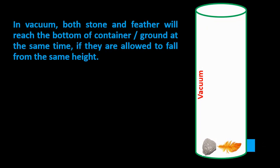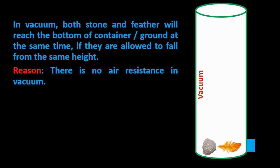In this case, both the stone and the feather reach the bottom of the glass jar at the same time when allowed to fall from the same height. They reach together because there is no air resistance. So, in the presence of air the stone reaches earlier than the feather, but when there is no air, both reach the ground at the same time.